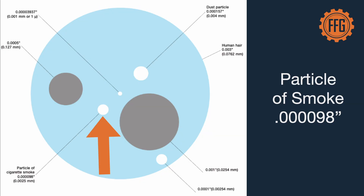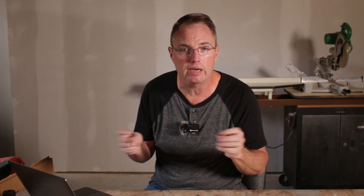Even smaller than a dust particle is a particle of smoke — and this is my favorite one. A particle of smoke is about one ten-thousandth of an inch. It's flying around in the air; you can barely see it — you just see the group of smoke, not the individual particle. That shows you how small a ten-thousandth of an inch really is and helps you gain perspective.